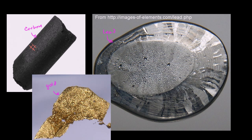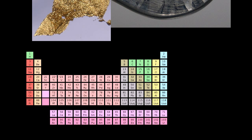Just to get our terminology — we call these different substances, these pure substances that have specific properties at certain temperatures and react in certain ways, we call them elements. Carbon is an element. Lead is an element. Gold is an element. You might say that water is an element, and in history people have referred to water as an element. But now we know that water is made up of more basic elements — it's made of oxygen and hydrogen.